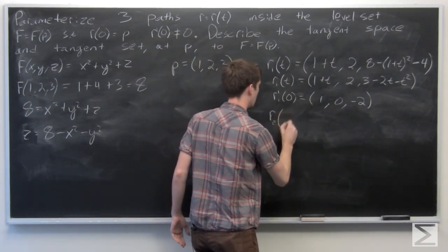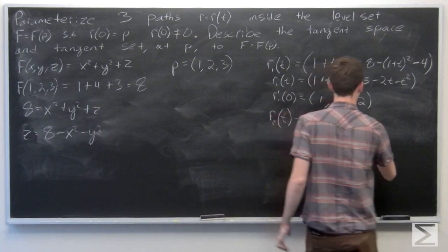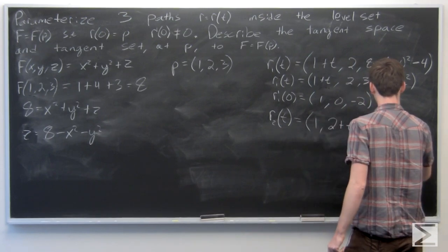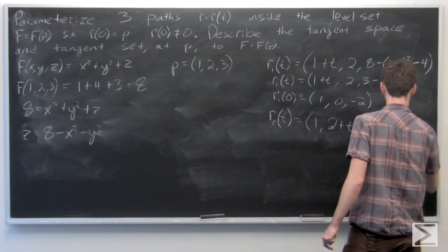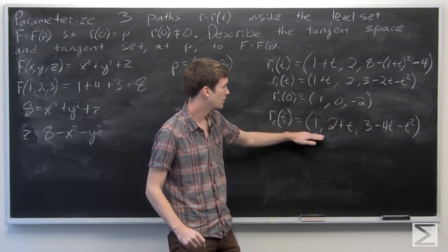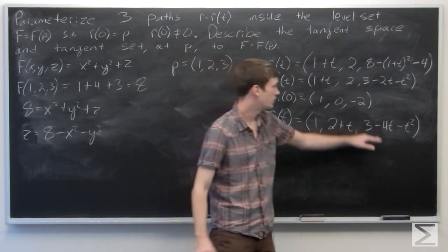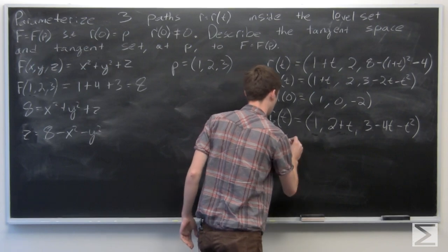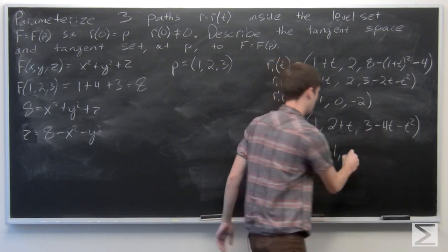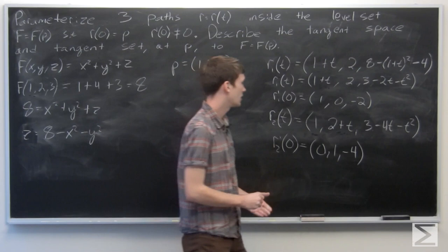For the second parameterization r2, we let x equal 1 as a constant and y equal 2 plus t. When we plug in t equals 0, we get the point (1, 2, 3). The derivative r2 prime of 0 equals (0, 1, negative 4), which is not equal to zero. So that's our second parameterization.